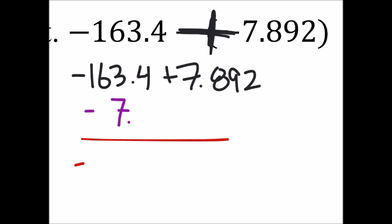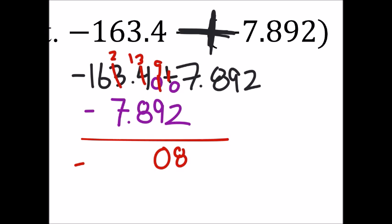So I'm going to need some zeros there, 163.4, and when I subtract I need to borrow here and here. So 10 minus 2 is 8, 9 minus 9 is 0, 3 we'll need to borrow from this one here and there as well.